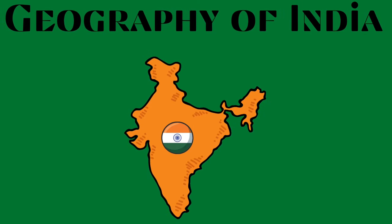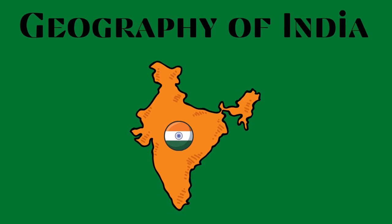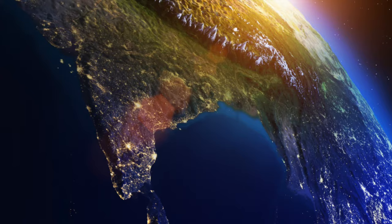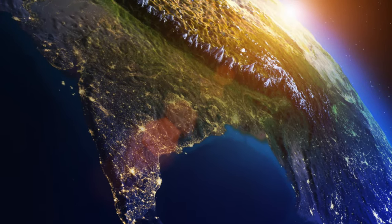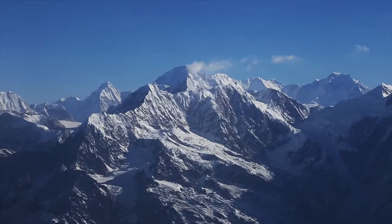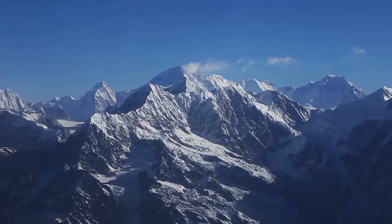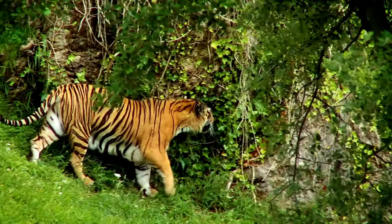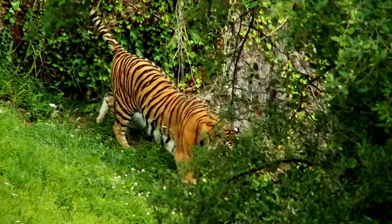This video covers the geography of the subcontinent of India. India is a subcontinent located in Asia. It includes diverse environments, including the highest mountain range in the world, the Himalayas, to forests filled with tigers, elephants, and even leopards.